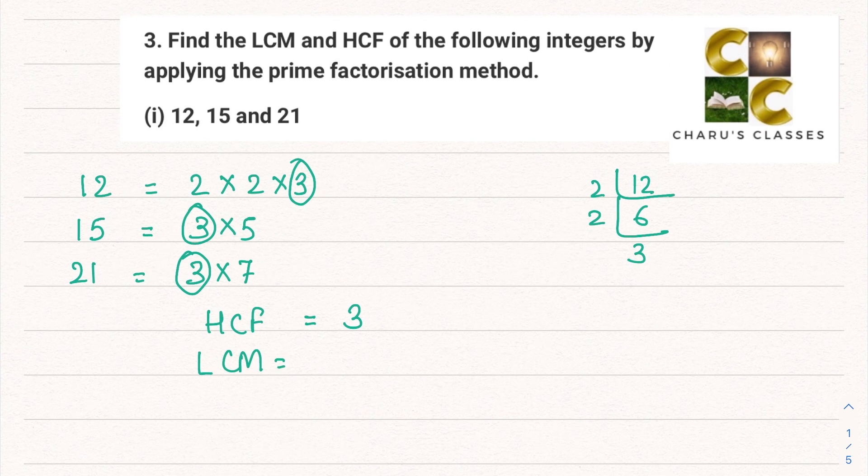For LCM, to find out what our number is which is common, we write it one time and we multiply all the other factors. So 3 × 2 × 2 × 5 × 7.